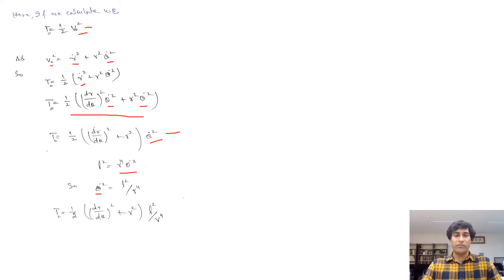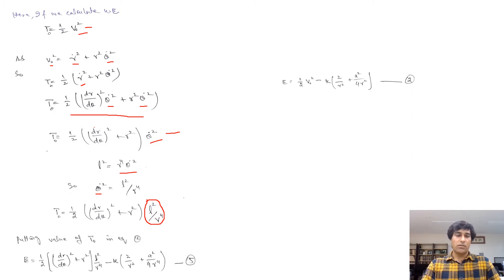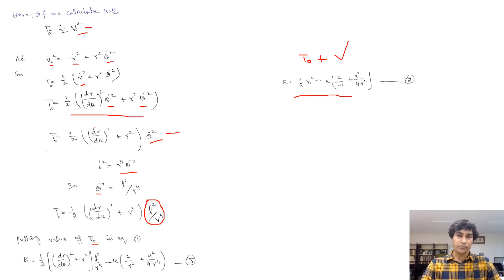After placing the value of θ̇², kinetic energy T₀ equals (1/2) × [(dR/dθ)² + R²] × l²/R⁴. We then substitute this value of T₀ into the total energy equation (equation 2) — where total energy = kinetic energy + potential energy — giving us equation 5.